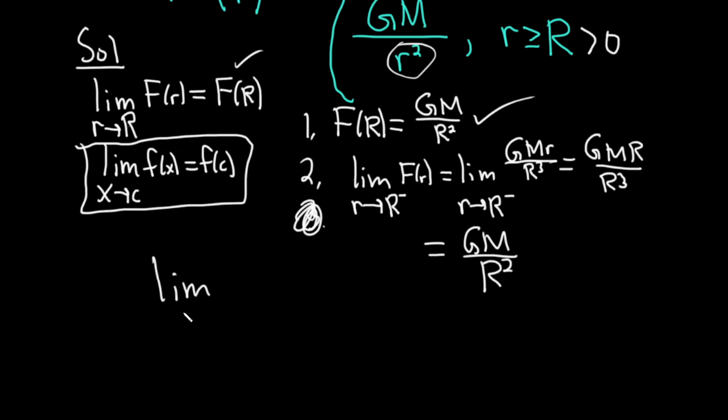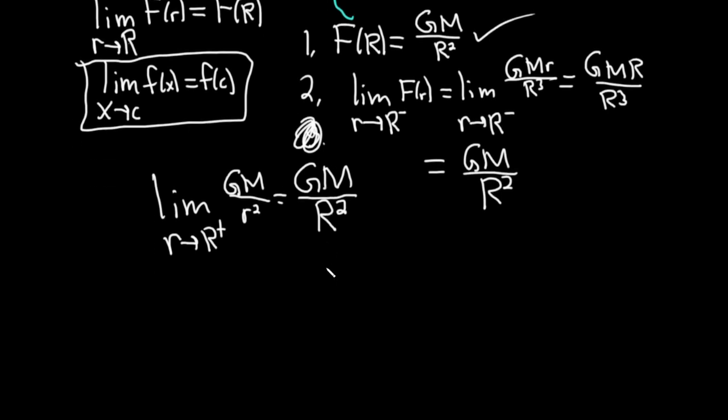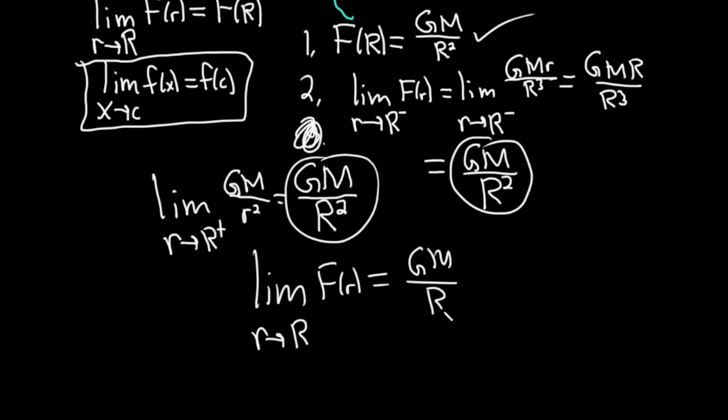Let's check from the right. We take the limit as little r approaches big R from the right. In this case, we would use this piece here, because r is bigger than big R. So this would be GM over little r squared. And you can just plug in big R, so you get GM over R squared. So they're the same, so therefore the limit exists. Because from the left we got this result, from the right we got this result. Therefore, the limit as little r approaches big R of F of R is equal to GM over R squared. So the limit certainly exists.